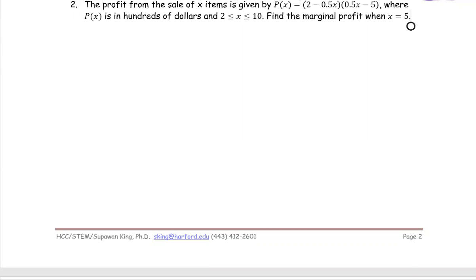In this problem, the profit from the sale of x items is given by the profit function P(x) equals the product of the quantity 2 minus 0.5x and the quantity 0.5x minus 5.